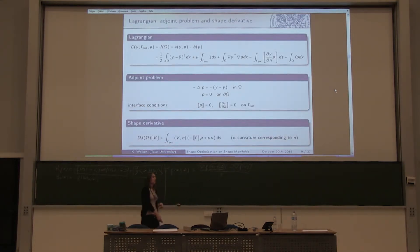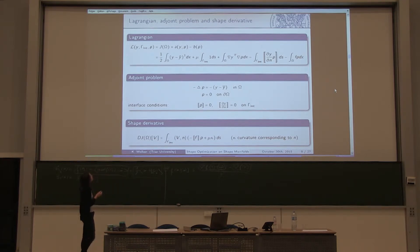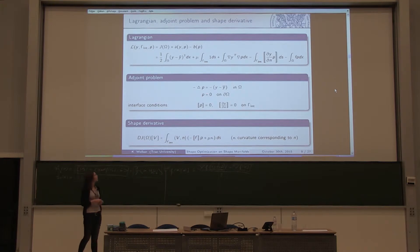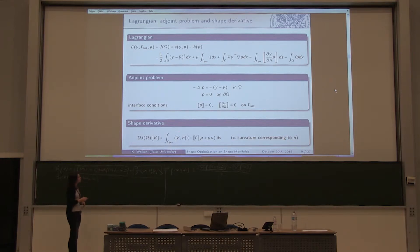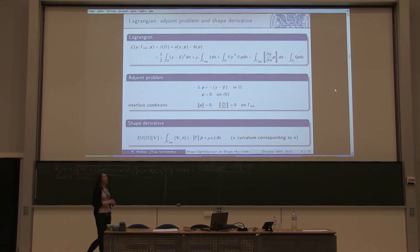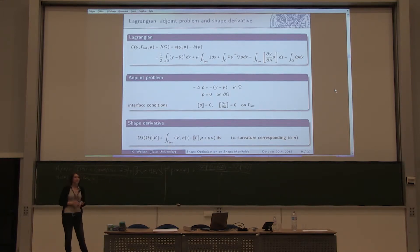We build the Lagrangian to our minimization problem, consisting of the objective function, a bilinear form, and a linear form from the PDE constraint. The adjoint problem is also a Poisson equation with Dirichlet boundary conditions and two interface conditions. The shape derivative is given by an interface integral; a second term arises from the parameter regularization. The shape derivative calculation is very technical — we achieve it by applying the theorem of Correa and Seeger and evaluating the shape derivative of the Lagrangian at its saddle point.